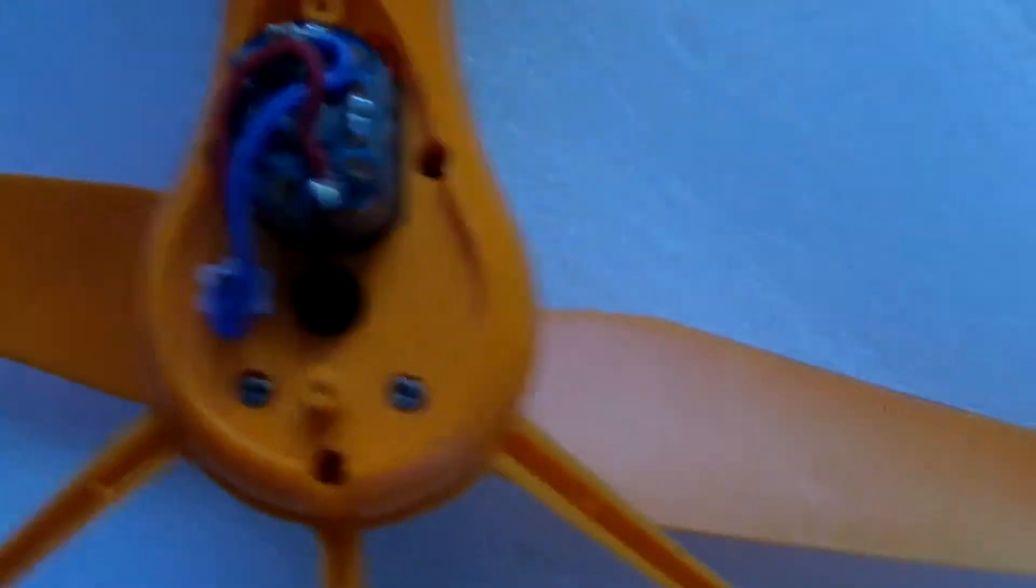And now we check the color of the wires on the motor. This is blue. This is red.